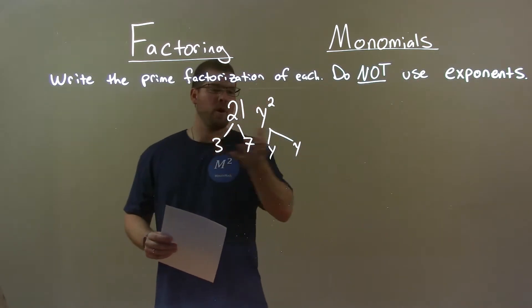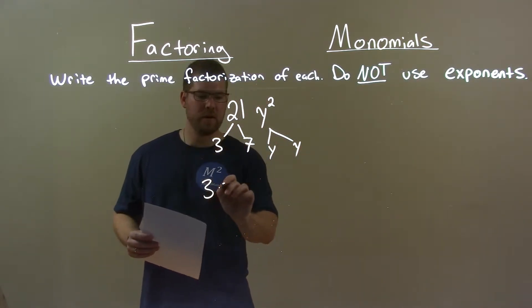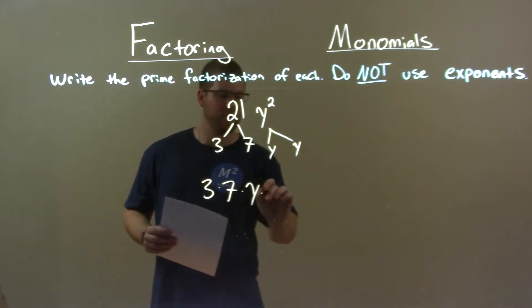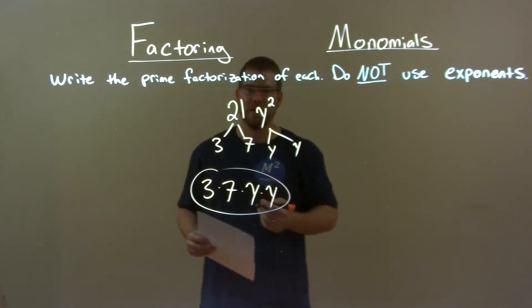So, we have them now all broken down, so that's it. Let's go rewrite it. 3 times 7 times y times y gives us 21y squared, so here is our final answer.